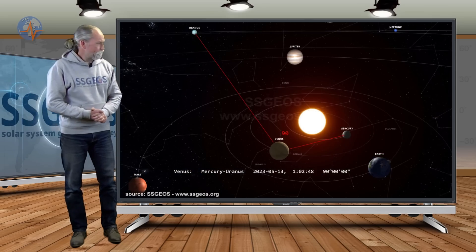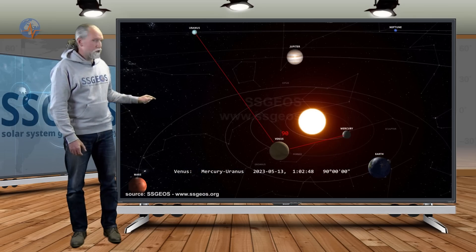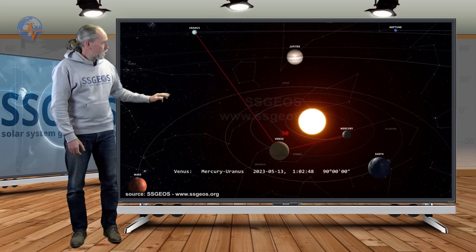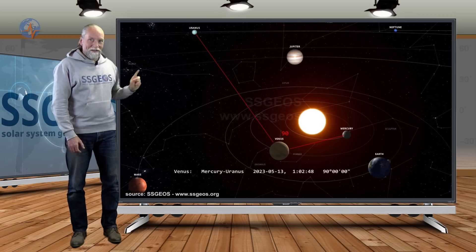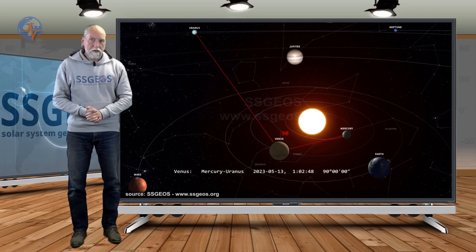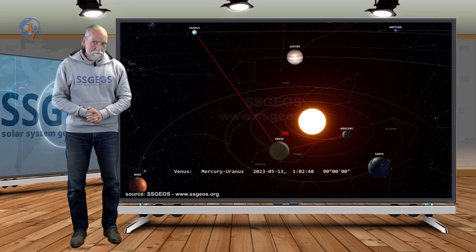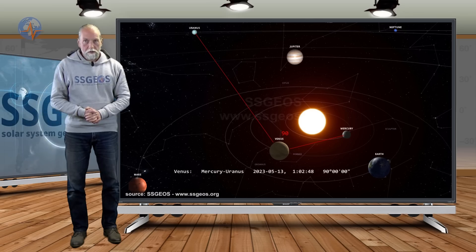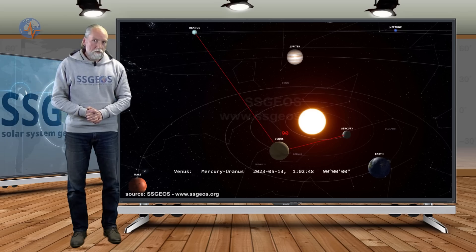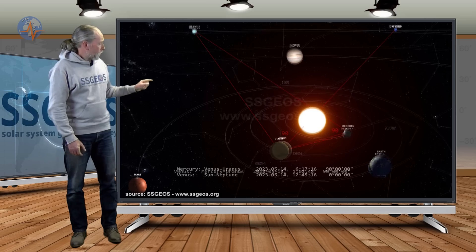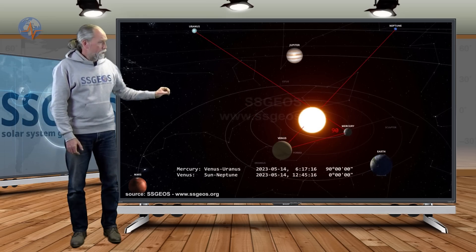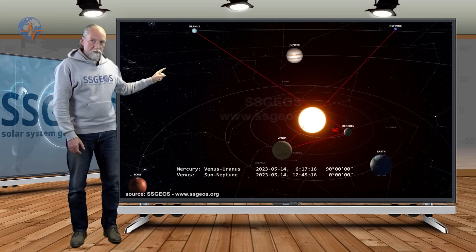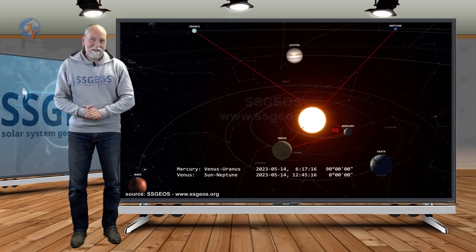Let's have a look at the solar system again. On the 13th, we have a 90-degree angle of Venus with Mercury and Uranus, and that's a critical one. Usually they come in pairs because Venus is close to Mercury and they are close to the Sun, while the outer planets are far away. Indeed, on the 14th, we also have a 90-degree angle: Mercury with Venus and Uranus.